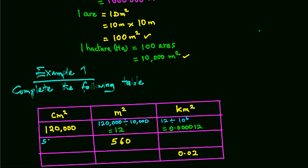Now to convert 560 square meters to square centimeters, we multiply by 10,000. So this would give us 5,600,000 square centimeters.